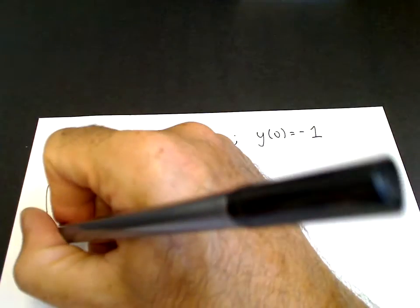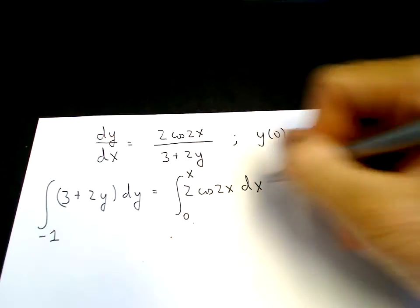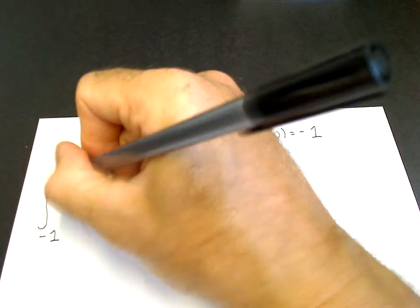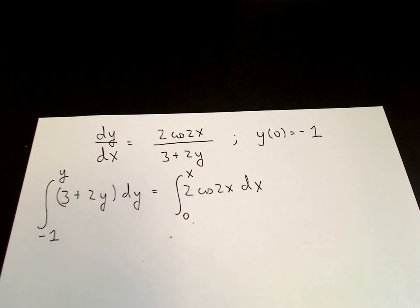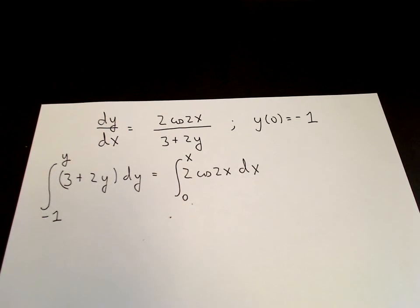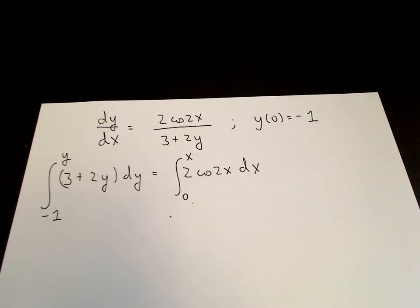So we can integrate from 0 to x. And then y at x equals 0 is minus 1. y at x is what we call y. So the differential equation is integrated. We may or may not be able to do this integral. In this case, we can.